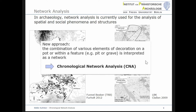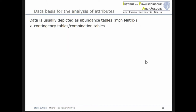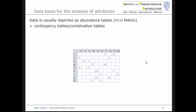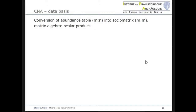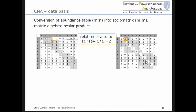I switched the network from a spatial or sociological into a chronological dimension. Therefore, I call my approach Chronological Network Analysis, abbreviated as CNA. Those databases are usually presented as abundance tables or contingency tables. In the lines you find the attributes — in our case various elements of decoration — and in the columns the units — in our case vessels or features like pits or graves. In the first step, I had to convert the database into a sociometric matrix. This can be done by a simple arithmetic operation from matrix algebra: the values of cells from the abundance table are multiplied row-wise and summed column-wise, resulting in the scalar product of the abundance matrix. For the analysis, we calculate a matrix for the attributes as well as one for the units.